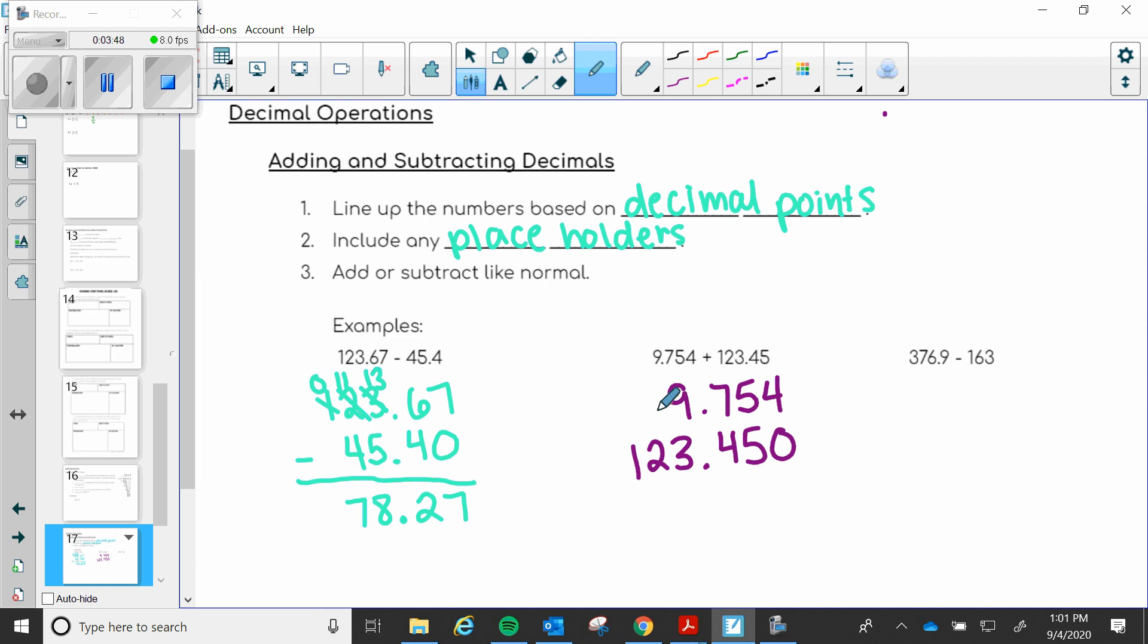You could put placeholders right here if you want to but it is not necessary. So now you just add like normal. We've got our decimals lined up. All of our place values are lined up correctly so all you got to do is add.